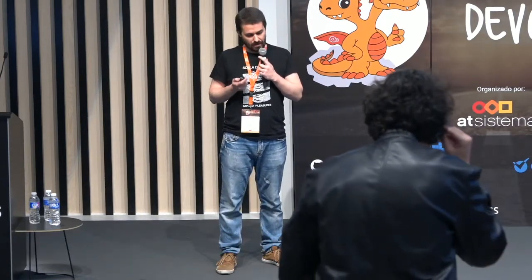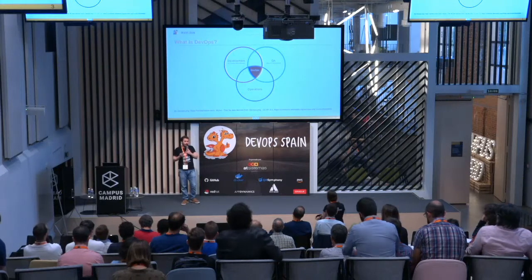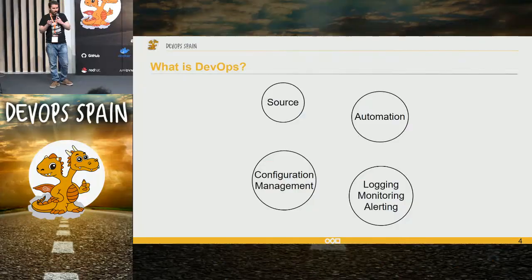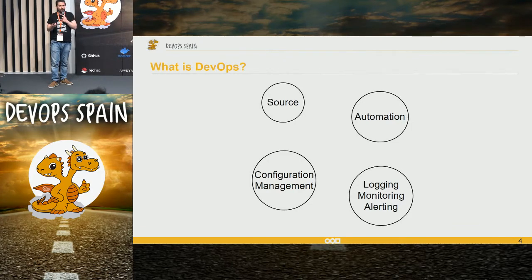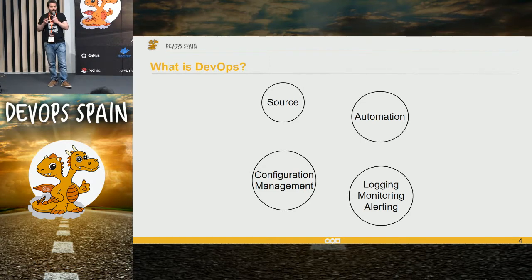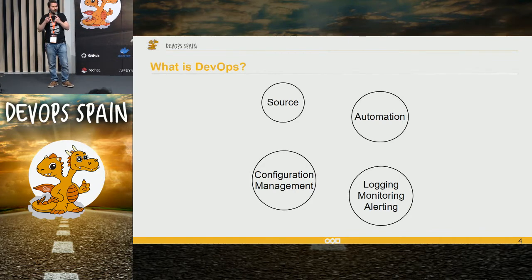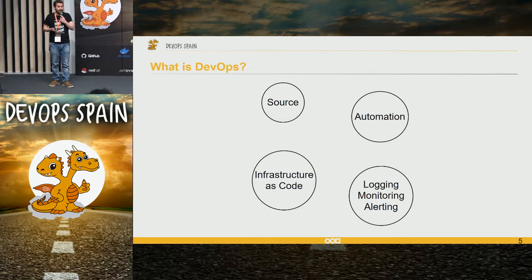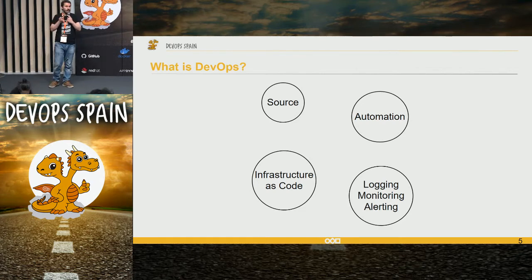DevOps is the intersection of development, operations, and QA. It's all about the practices and tools we choose to deal with source control, code review, branching strategies, how we automate our builds, how we do continuous integration, continuous delivery, continuous testing, how we automate releases, how we do configuration management or infrastructure as code, how we log and access those logs, how we trigger alerts based on conditions, and how we monitor. That's DevOps.